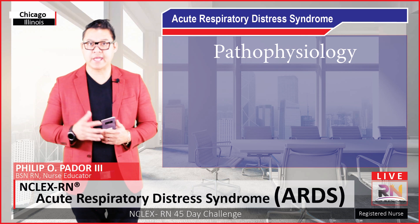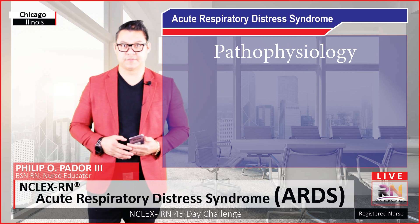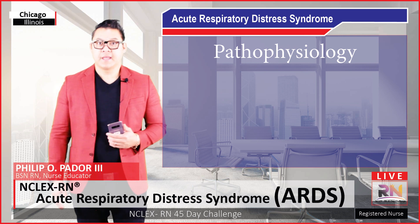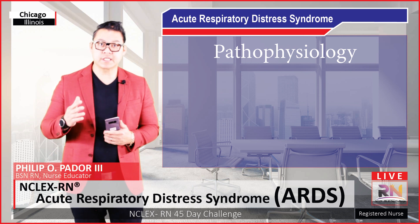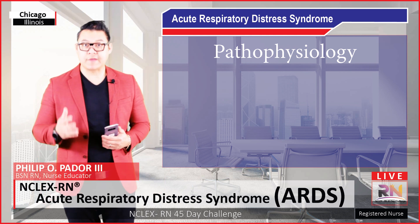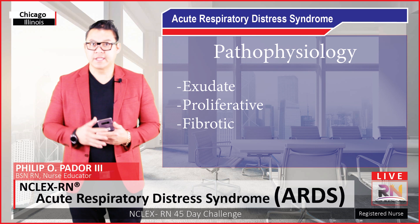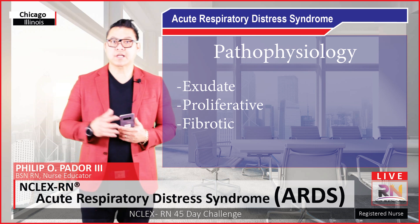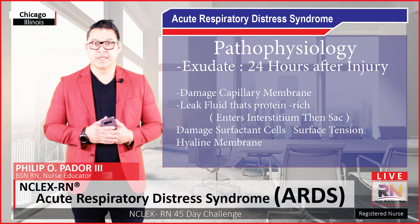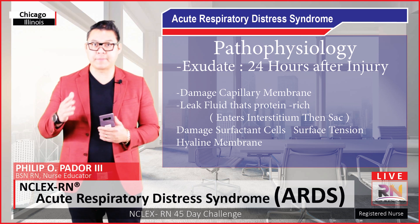Now let's talk about the pathophysiology of ARDS — how does it happen? As I go through these phases, this is the absolute worst-case scenario. Not all patients even go through these phases; some patients recover faster than others. But if they do hit this last phase, their prognosis is very poor and they're going to have a lot of lung damage. There are three phases: exudative, then proliferative, then fibrotic. First, let's talk about the exudative phase. This happens about 24 hours after the injury — and remember, it can be direct or indirect. Regardless, there's going to be damage to that capillary membrane.